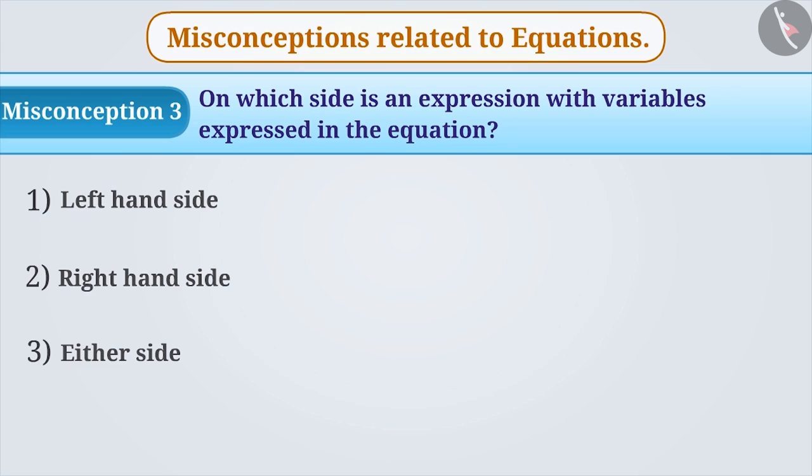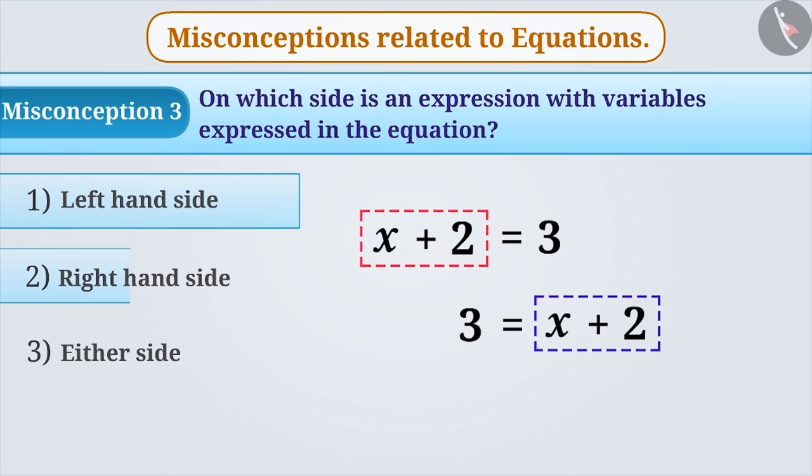We are so used to expressing equations with variables on the left-hand side that we find it wrong to express them on the right-hand side. The correct understanding is that we can express them on either side of the equation.